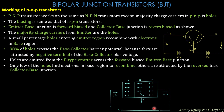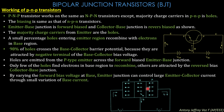Since the collector-base region is reverse biased, the negative terminal of the battery attracts all the holes into the collector region, causing holes to flow from the emitter region towards the collector region. By varying the forward-biased voltage at the base-emitter junction, a large emitter current can be controlled through a small variation of base current.